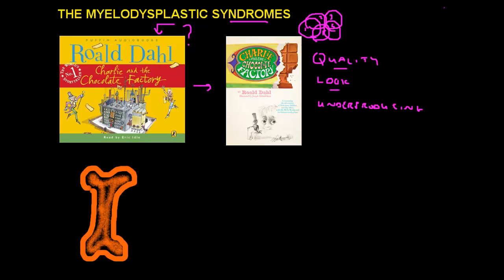So let us replace the chocolate factory with a factory of blood. The factory of blood is found in the bone marrow — the marrow is actually the factory of blood, and it is found in many of the bones in the body. This helps us understand the first part of the word myelodysplastic syndrome: 'myelo,' which is derived from the Greek 'myelos,' meaning marrow. So we know something is wrong with the factory — something is wrong with the marrow — that leads to a challenge later on.